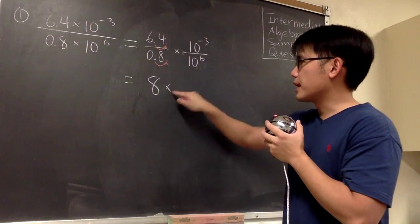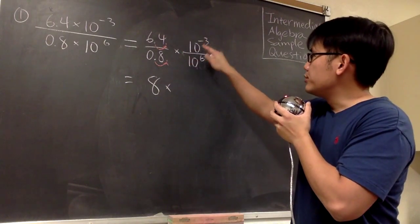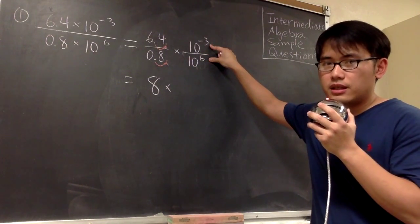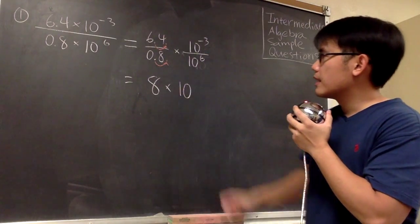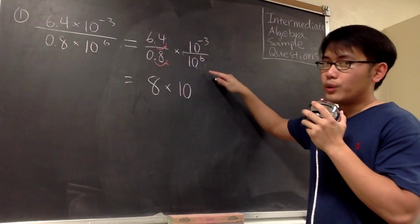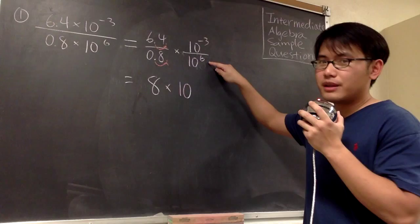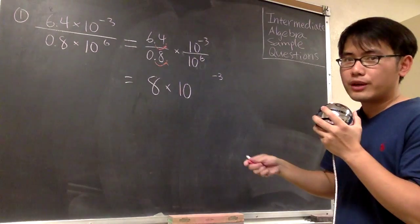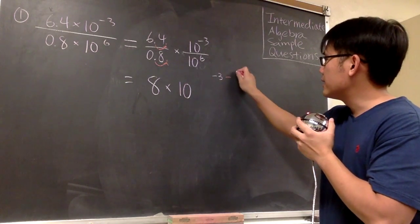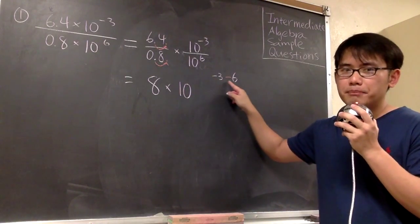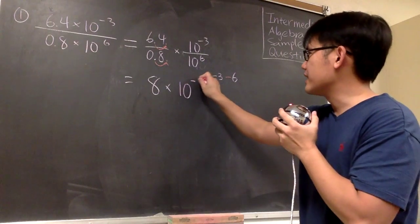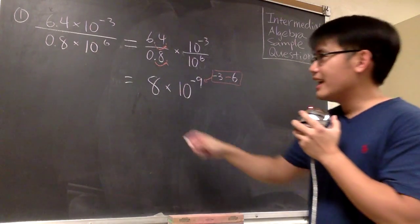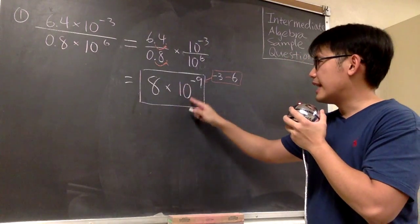Then for the second part, I'll put down a multiplication: 10 to the negative 3 over 10 to the positive 6. They have the same base, so I just need to figure out the new exponent. To do that, we keep the base the same, and when dividing we subtract the exponent on the top minus the exponent on the bottom. So we have negative 3 minus 6, which equals negative 9. That's the new exponent. So the answer is 8 times 10 to the negative 9 power.